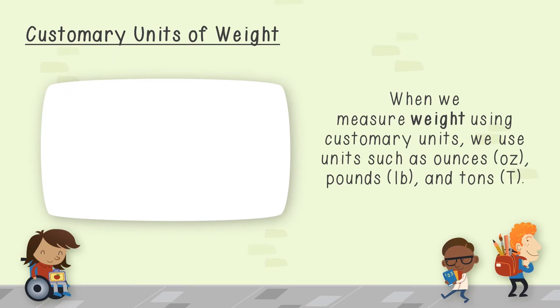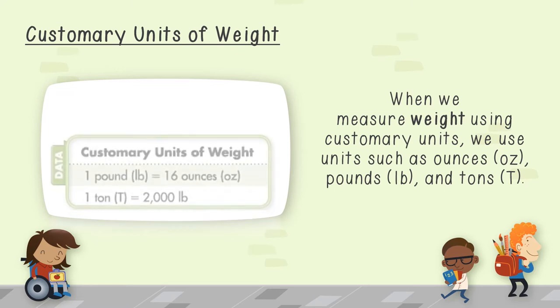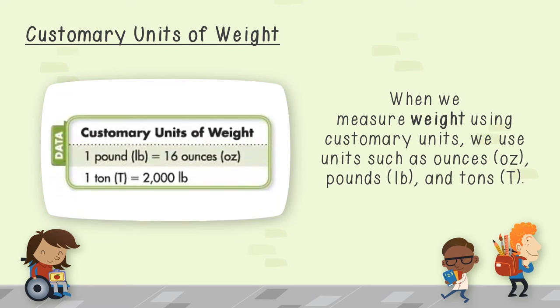Now let's shift gears and talk about customary units of weight. When we measure weight using customary units, we use units such as ounces, pounds, and tons. Even though the word ounces is used here, try not to get confused with fluid ounces. Fluid ounces are used to measure capacity — things like liquid — whereas ounces are used to measure weight. Take a look at the table. What relationships do you notice?